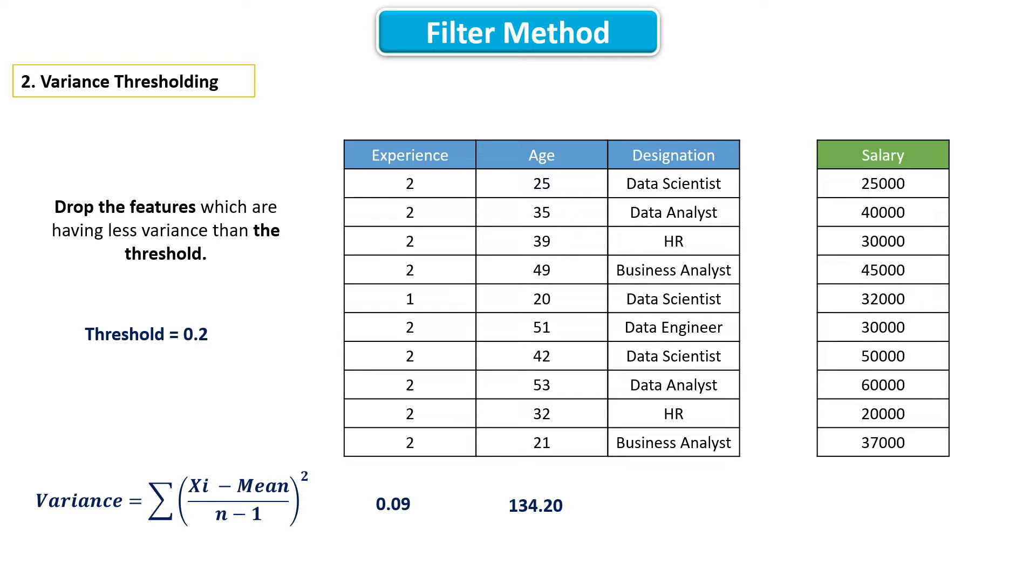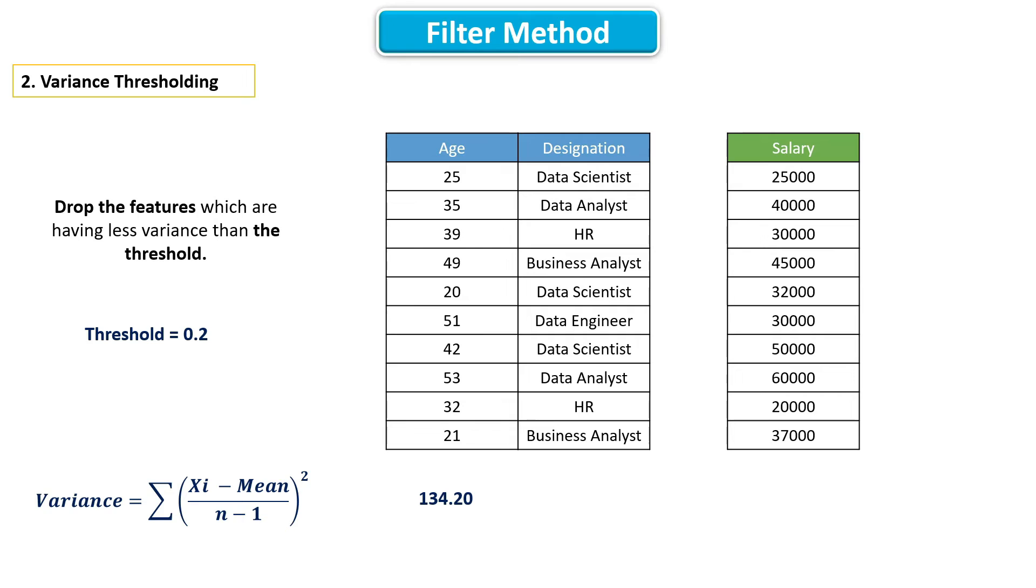For example, if the threshold value is 0.2, then this feature will be dropped. This is how variance thresholding works.